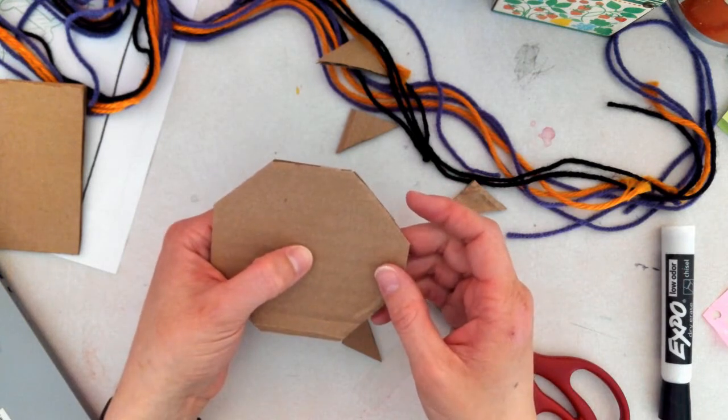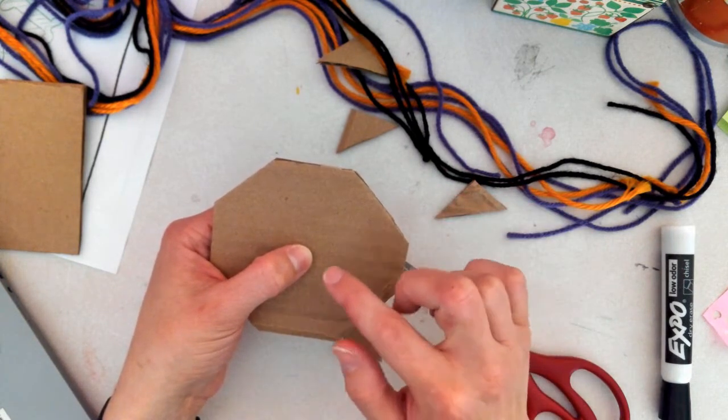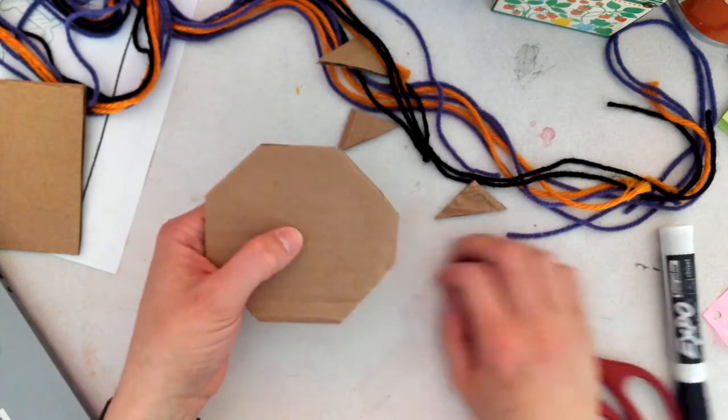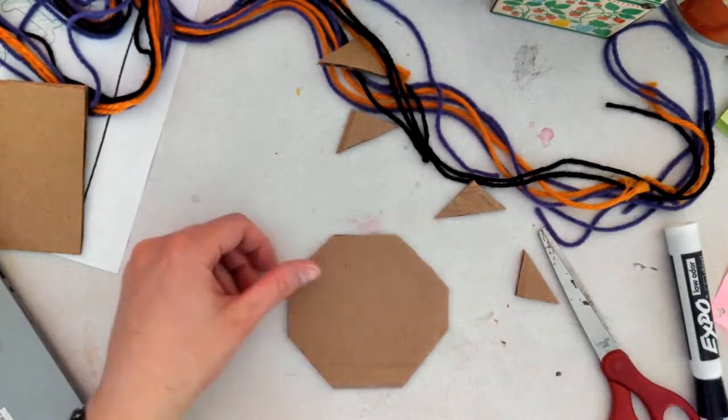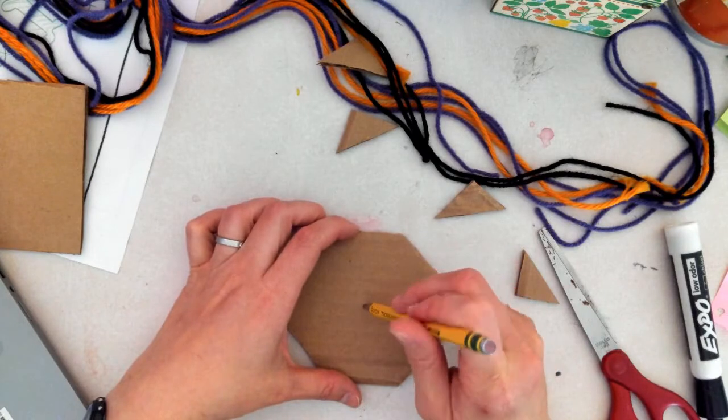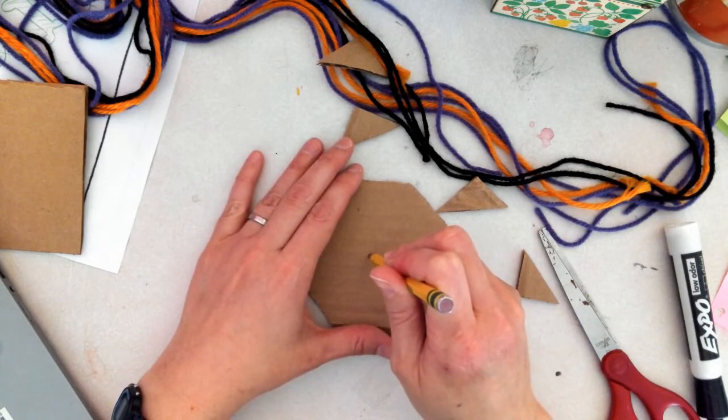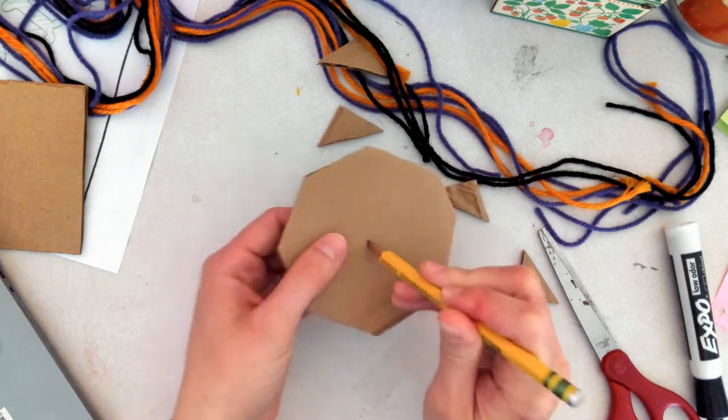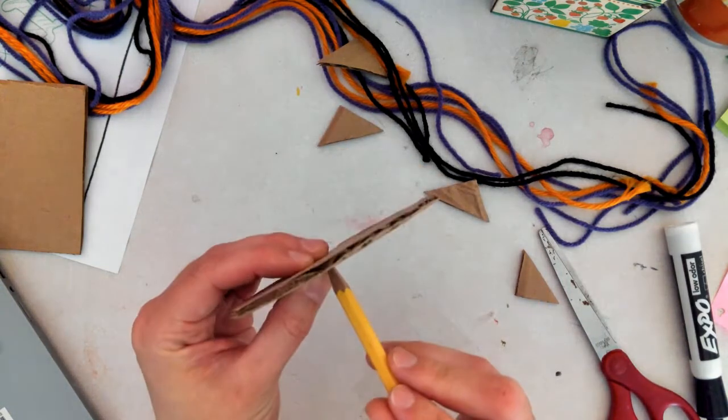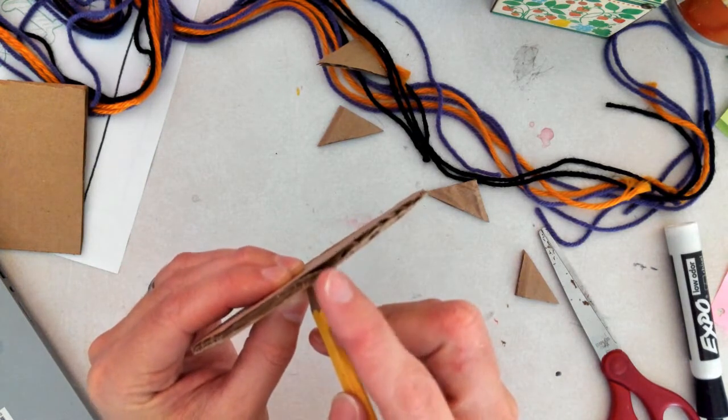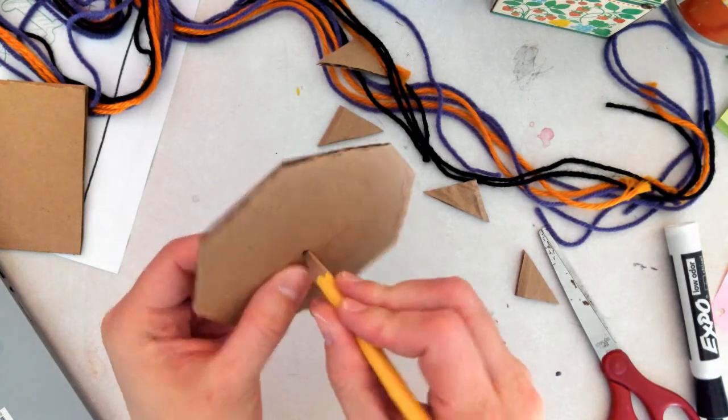Then the next thing that we're going to do is we're going to poke a hole right in the middle with our pencil. So what I am going to do first is just place it down on the table and sort of twist my pencil back and forth until it punctures. This is corrugated cardboard, so it's got some air in between, so it punctures the first layer.